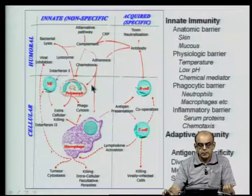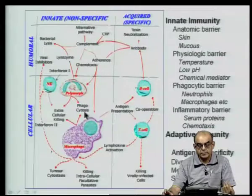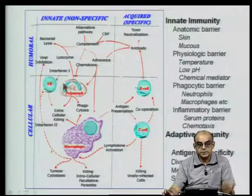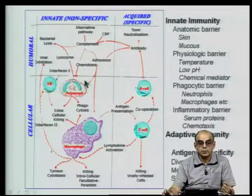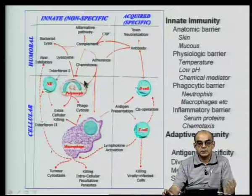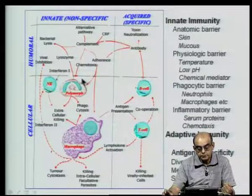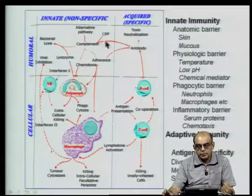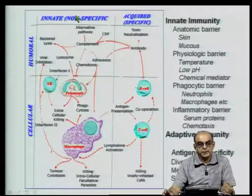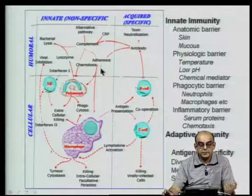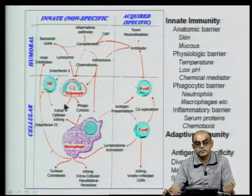Innate immunity involves a variety of mechanisms and cells, including macrophages, which were first discovered when they were observed surrounding a thorn in starfish larvae, trying to remove it. There are a variety of molecules involved in the innate immune system, such as complement molecules, lysozyme, various kinds of cytokines, and molecules that cause chemotaxis of macrophages.